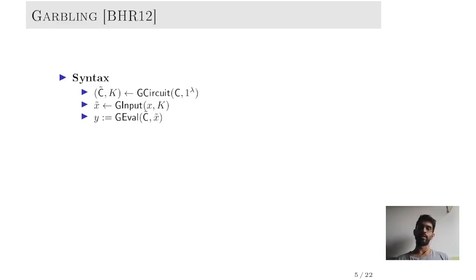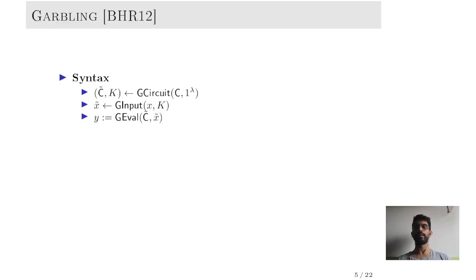They suggested the following syntax for garbling. It consists of three algorithms: a randomized garbling circuit algorithm which takes a circuit C and outputs a garbled circuit C tilde and a secret key K; a garbled input algorithm which is also randomized, taking the input X and the secret key K and outputting a garbled input X tilde; and finally a garbled evaluation which is a deterministic algorithm taking the garbled circuit and garbled input and outputting the output Y.